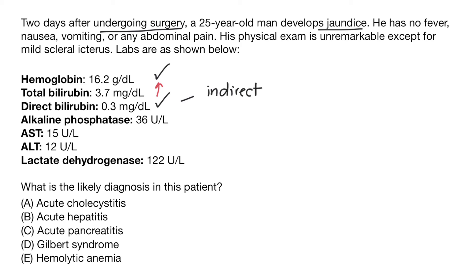Alkaline phosphatase is 36, which is normal. AST is 15 and ALT is 12, both normal. LDH is 122, also normal. Alkaline phosphatase is usually elevated in the case of cholestasis or some sort of blockage of biliary drainage, indicating a post-hepatic cause — so that's probably not the case here. LDH is found within red blood cells, and if elevated, it's often seen in hemolytic anemia. Since LDH is normal, and hemoglobin is also normal, hemolytic anemia is less likely.